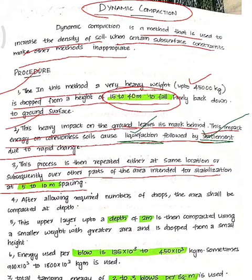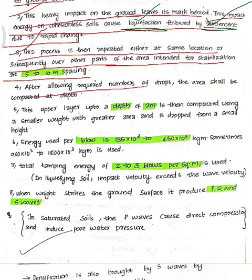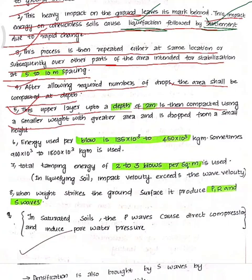After allowing the required number of drops, the upper layer of 2 meters depth is then compacted using a smaller weight with a greater area, dropped from a small height.